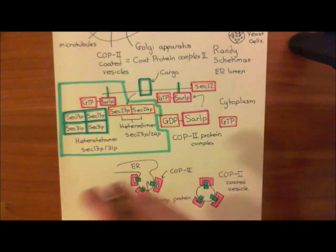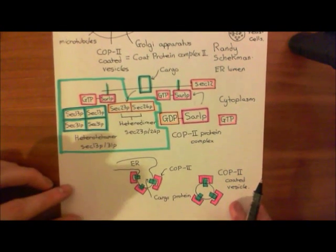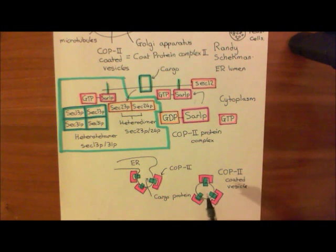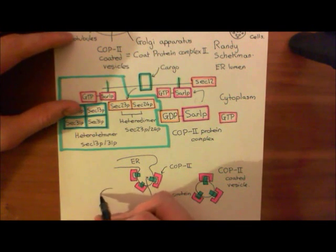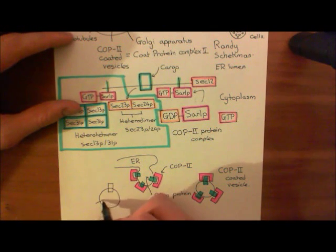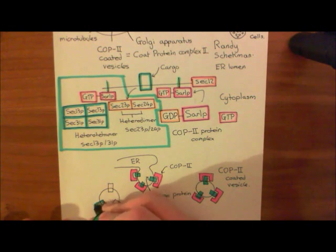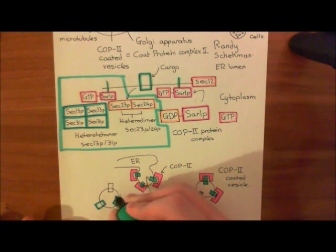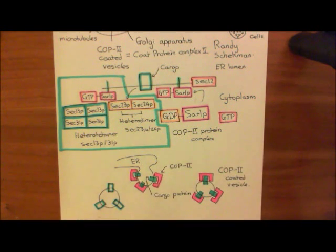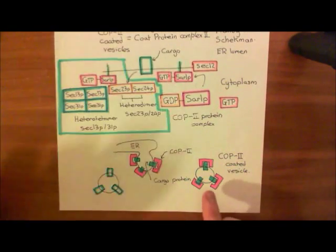During that process, whilst migrating from the endoplasmic reticulum to the Golgi, the vesicle is going to uncoat — meaning that these COP2 proteins come off the vesicle — so you end up with an uncoated vesicle with the protein cargo inside. Now, this uncoated vesicle needs to fuse with the membrane of the cis-Golgi. The reason you remove the COP2 coat is that you cannot fuse a COP2-coated vesicle whilst it still has the COP2 coating it.